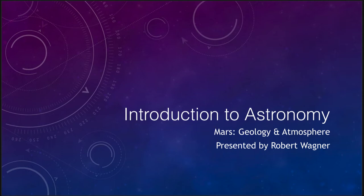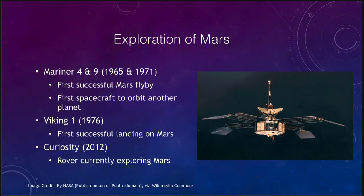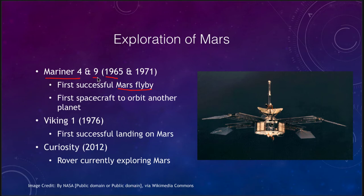Mars has been probably the best explored planet, with about two dozen craft that have visited it over the last 50 to 60 years. We can go back to some of the earliest ones, which would be the Mariner spacecraft. Mariner 4 in 1965 was the first successful Mars flyby, giving us our closest images of it to date. Mariner 9, six years later in 1971, was the first spacecraft to orbit another planet.